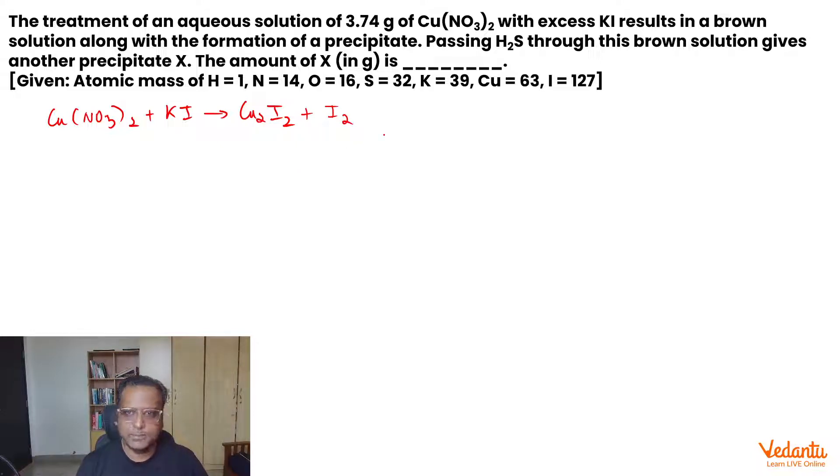Then he says, passing H₂S through this brown solution gives another precipitate X. Quite frankly, the brown solution is of I₃⁻ which contains 1 mole of I₂, so I just mentioned I₂ here. The next reaction he says, H₂S is passed through this brown solution and another precipitate is obtained. That is obtained of sulfur. Good job.